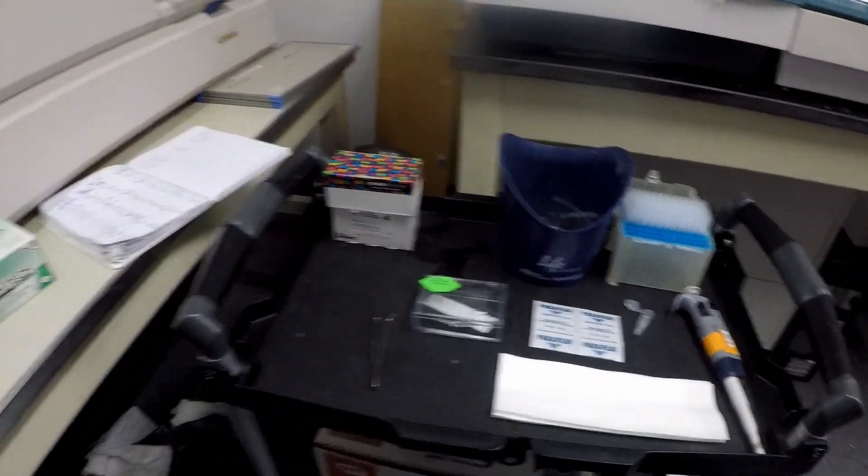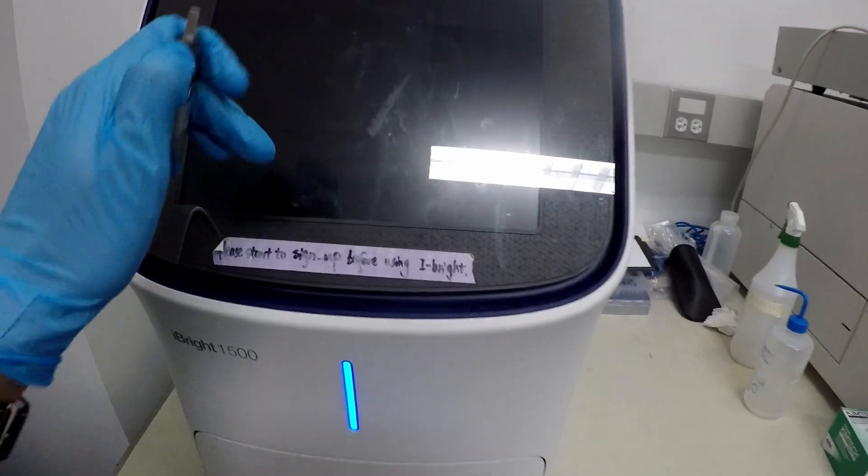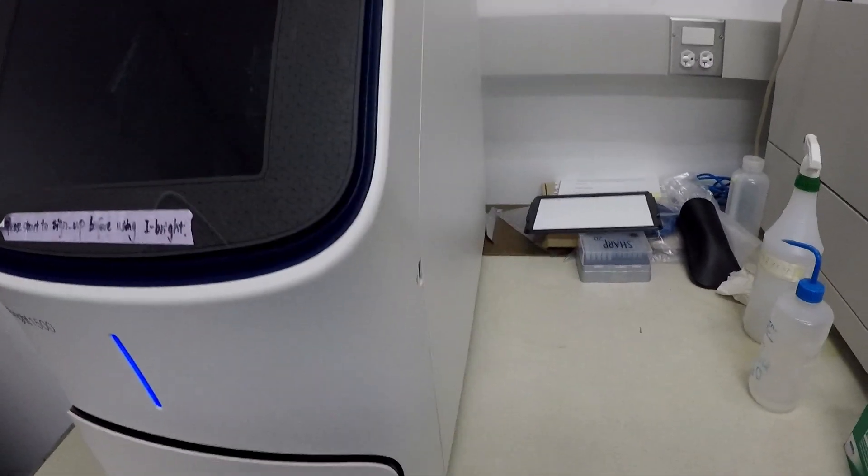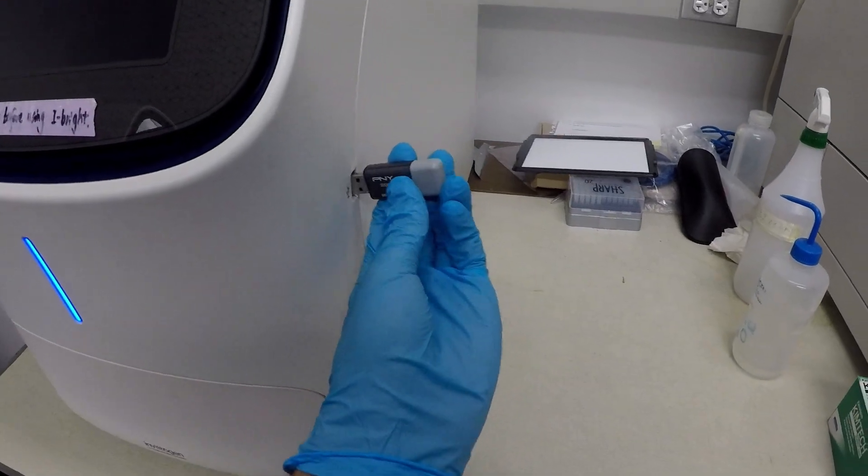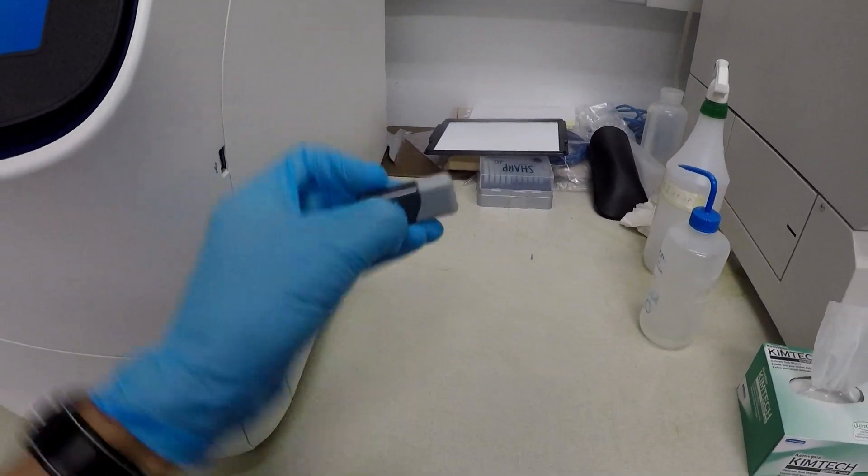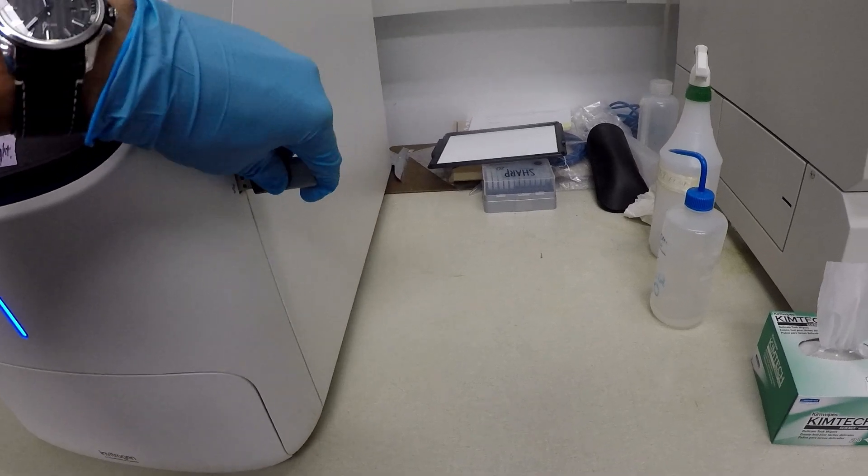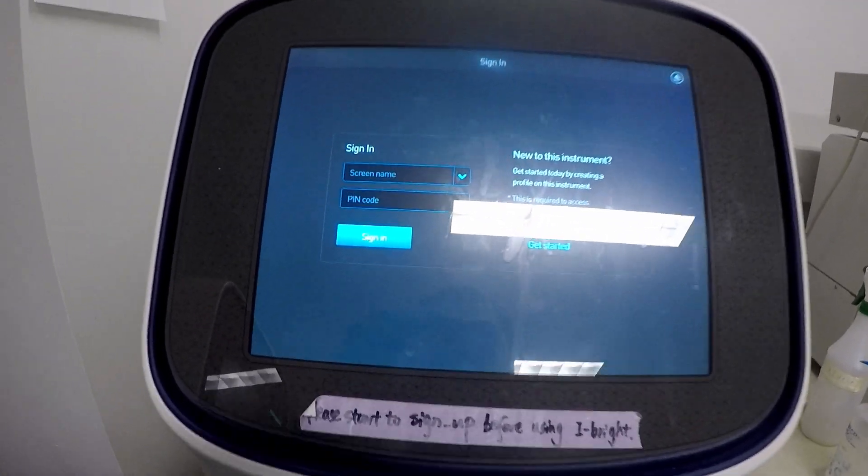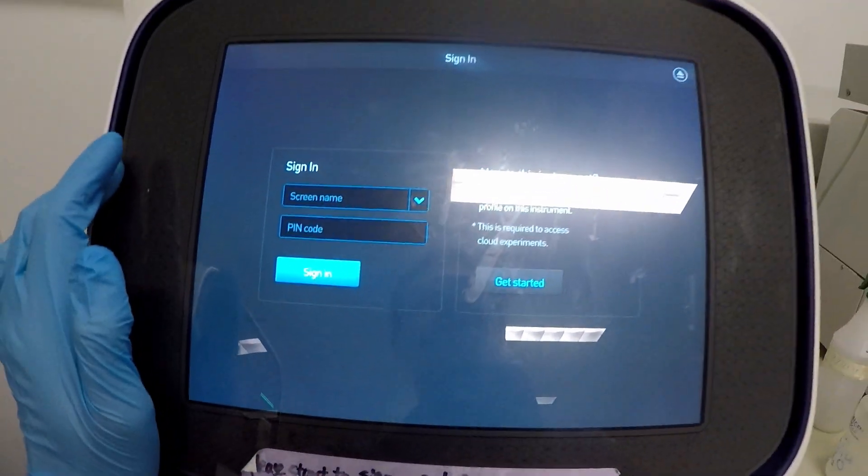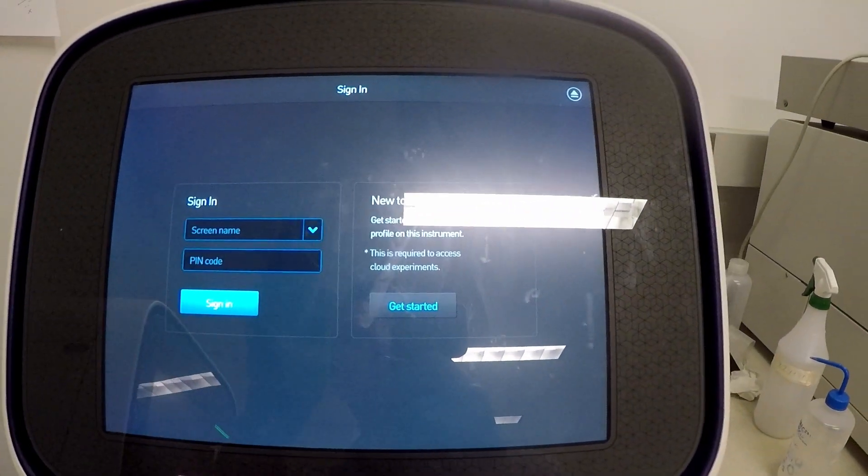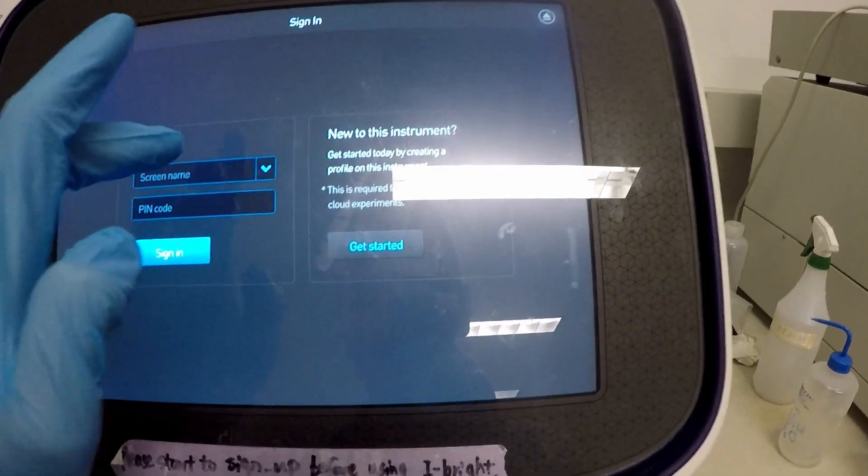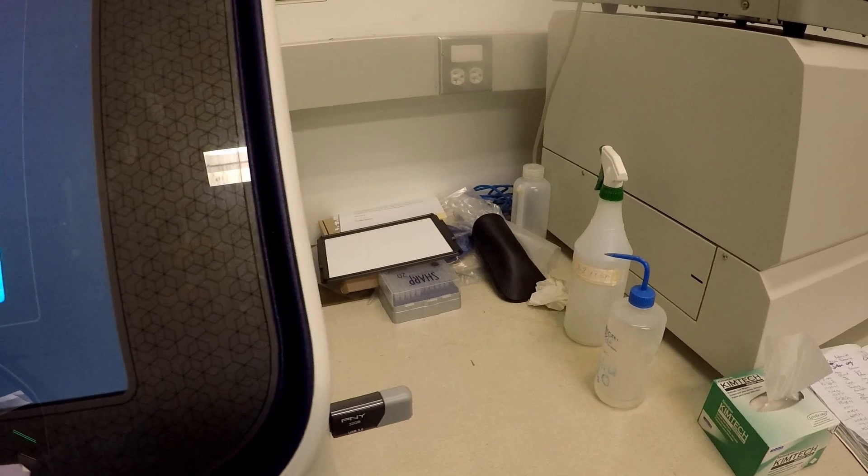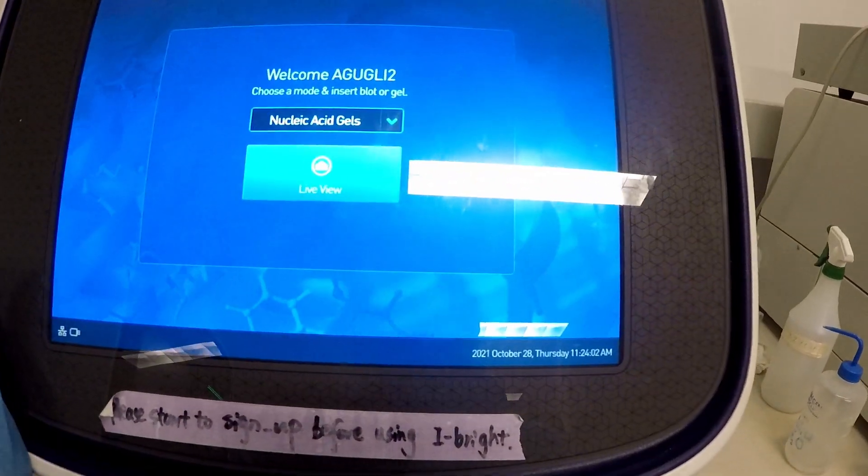So we can start using this machine. Just tap on the screen to turn it on. We can just insert our USB drive now. So it's going to ask you for your screen name and password. I have my own, but before you start using it independently you're going to have someone that's going to set it up for you.